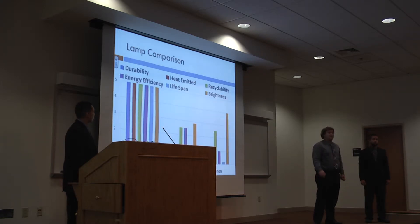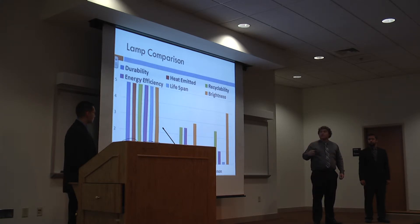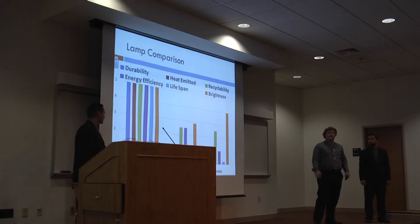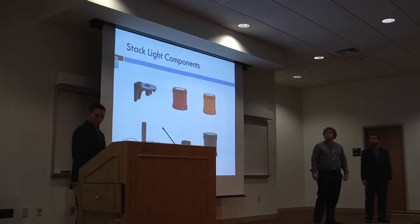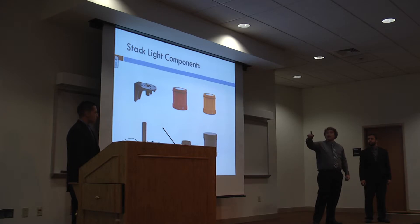Here is a length comparison of the three types. It has been turned into a graph based on six categories and turned into a scale to show the difference between them. And here are our stack light components that we used: we have our mount, our two bulbs, our stand, our cap and seal, and our horn.